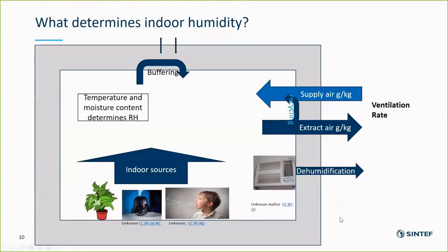Indoor humidity is determined by the sources indoors. Supply air contains moisture, and extract air removes moisture. Some of that moisture can be recycled. The mass balance will also be mediated by buffering in materials, and the mass balance and temperature together will determine the relative humidity. It's possible for moisture to diffuse in or out of the building, but that's not really of importance in practical situations we have encountered so far.